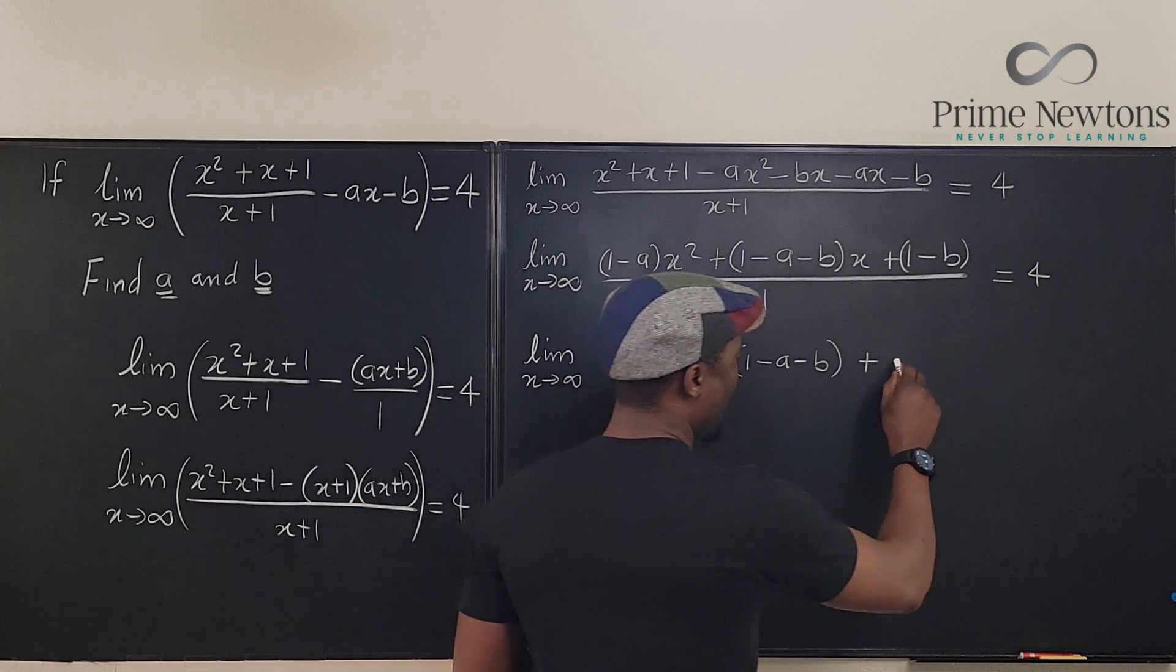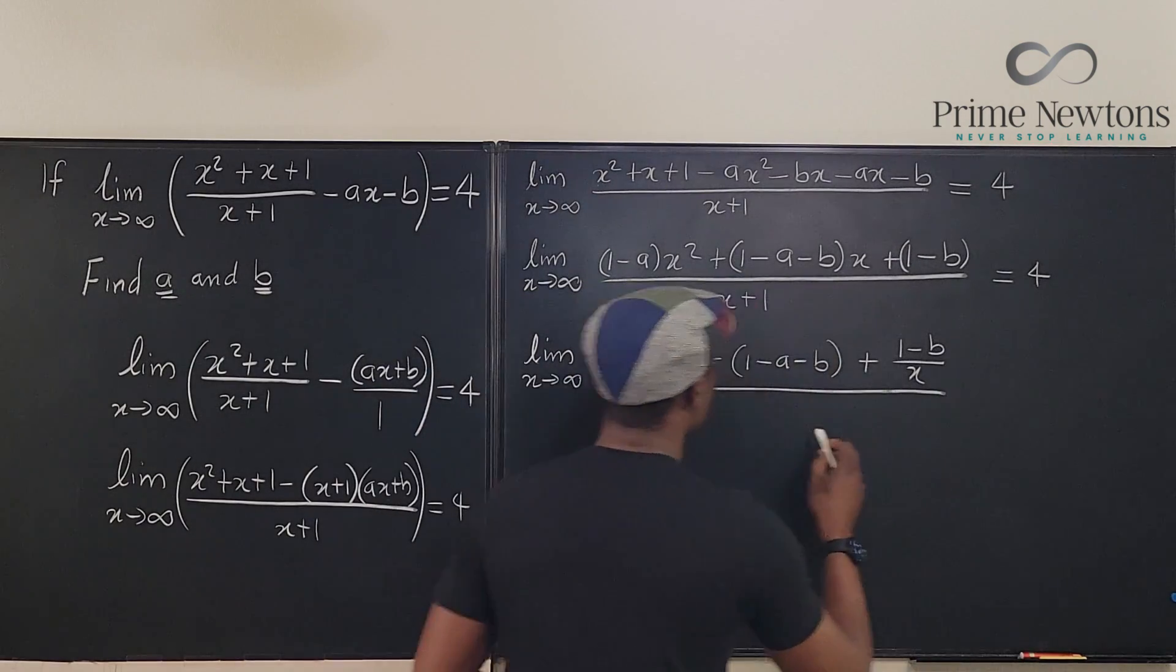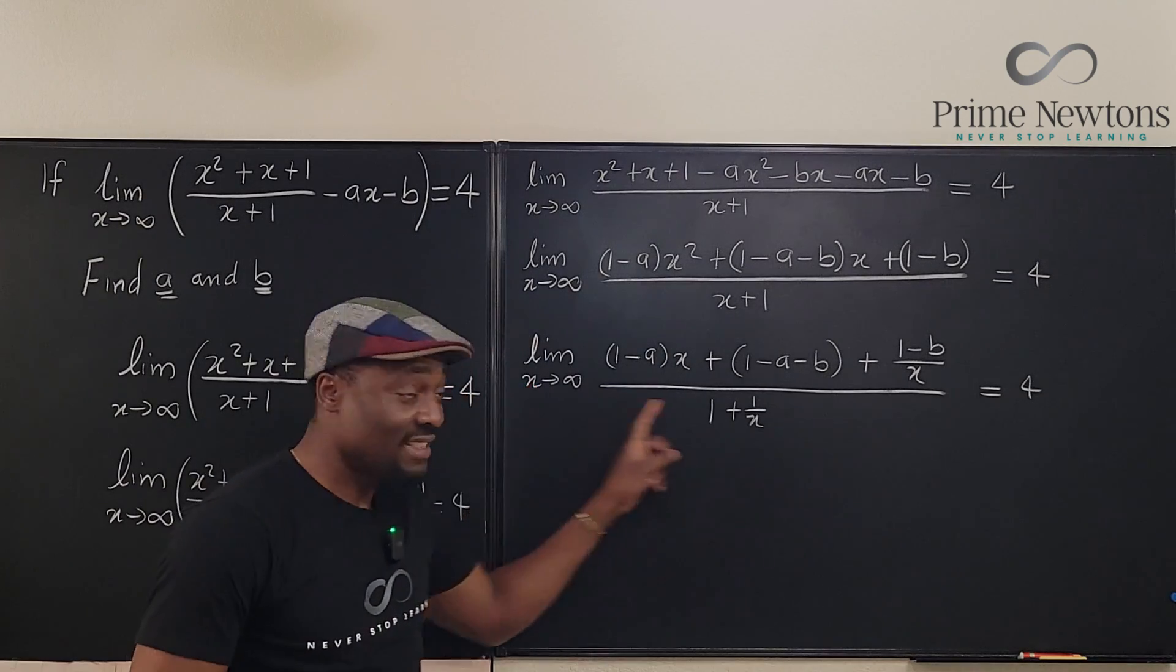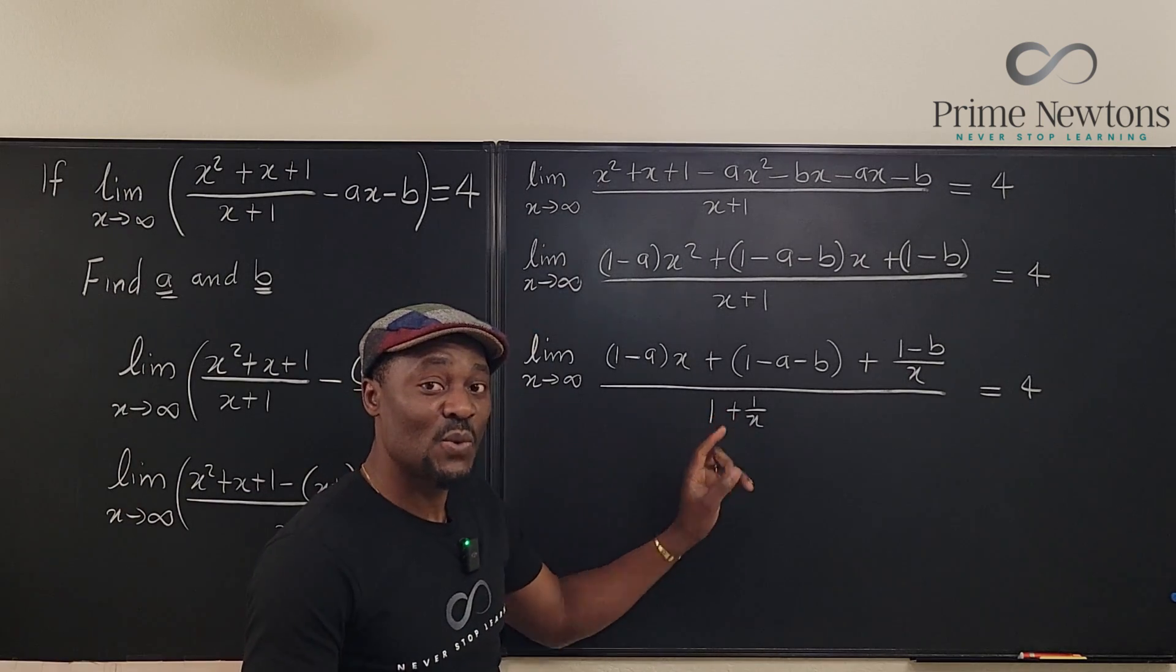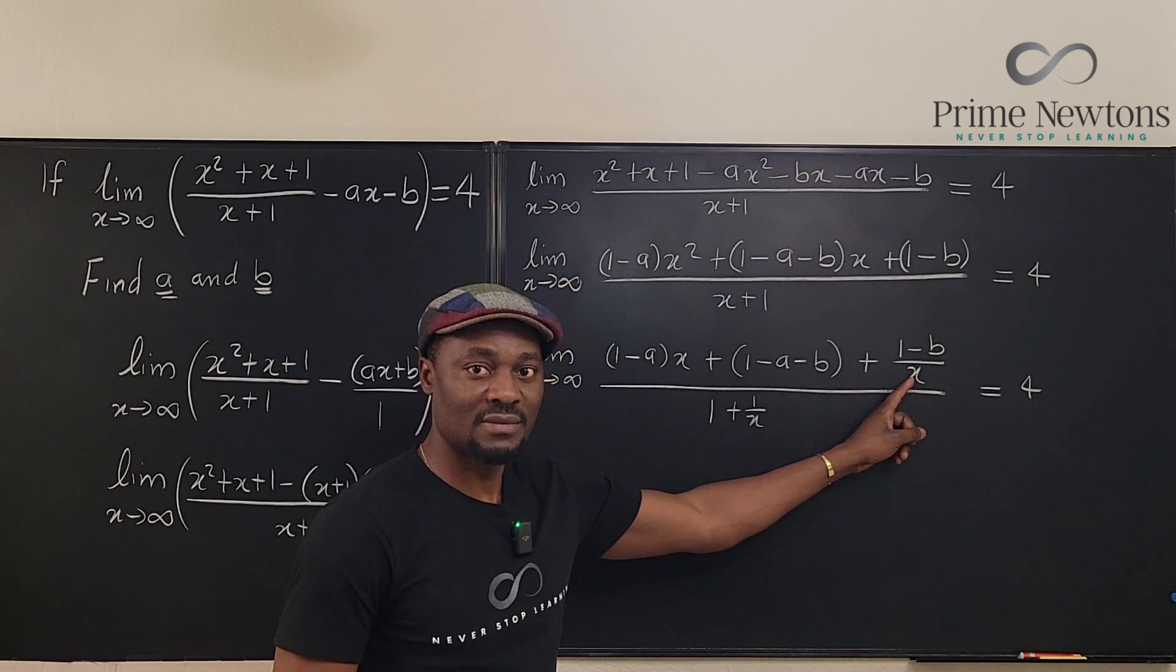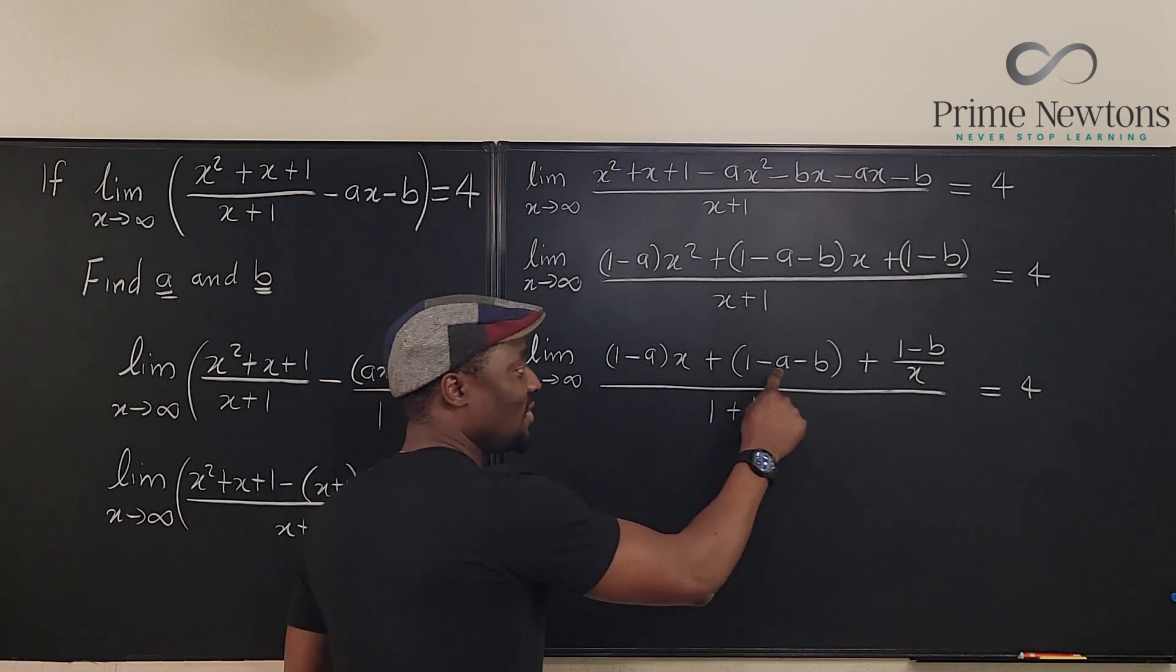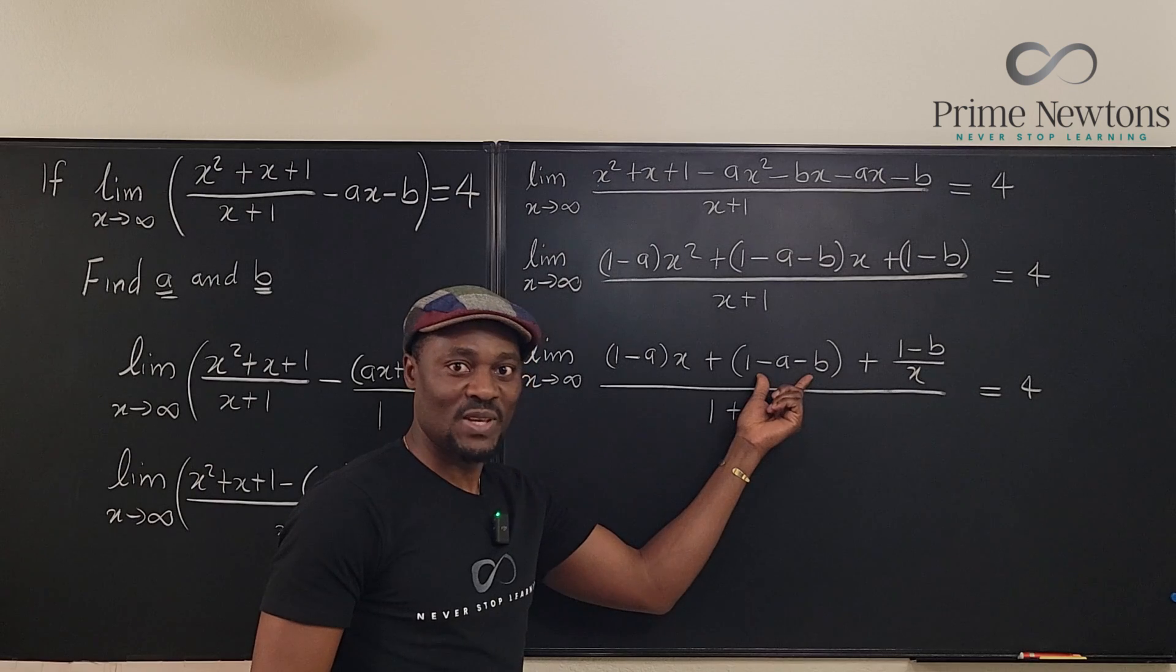If I divide this by x, I get (1 minus b) over x. In the denominator, I get 1 plus 1 over x. This is still equal to 4. Now when I take the limit, anything that has x in the denominator will go to 0. So this will become 0 and this will become 0. What we have left are this and this. If you add this to this, you should get 4, if this is finite.